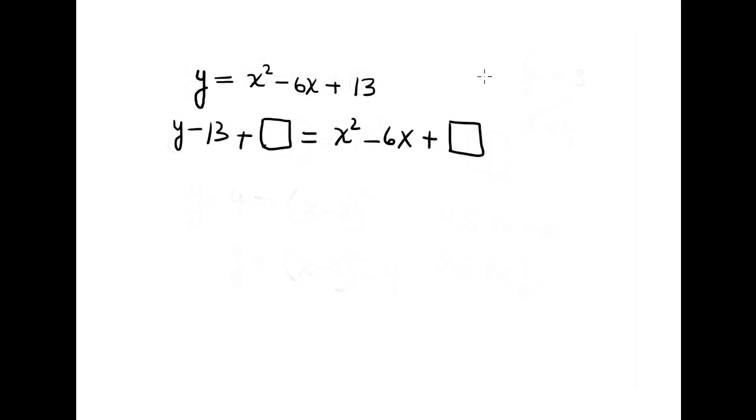It's obvious that the number is 6 divided by 2 is 3, and 3 squared is 9, 9 here and 9 here. So we have y minus 4 is equal, well the factorization, directly the factorization of this one. The factorization is open parenthesis x minus 3 is square.